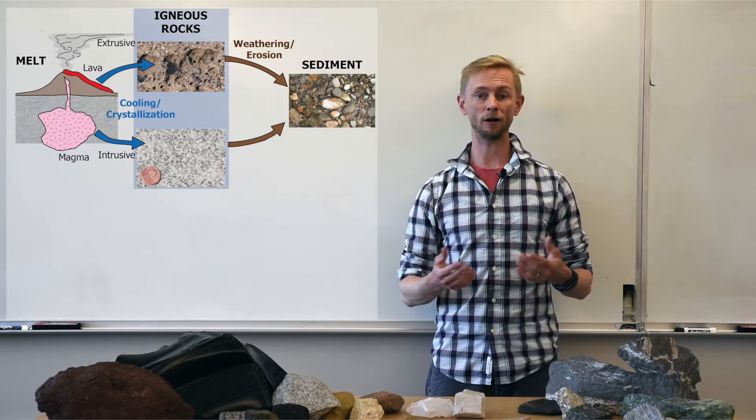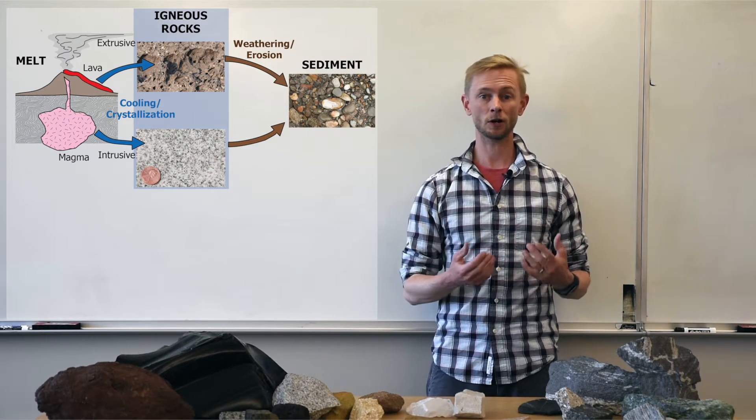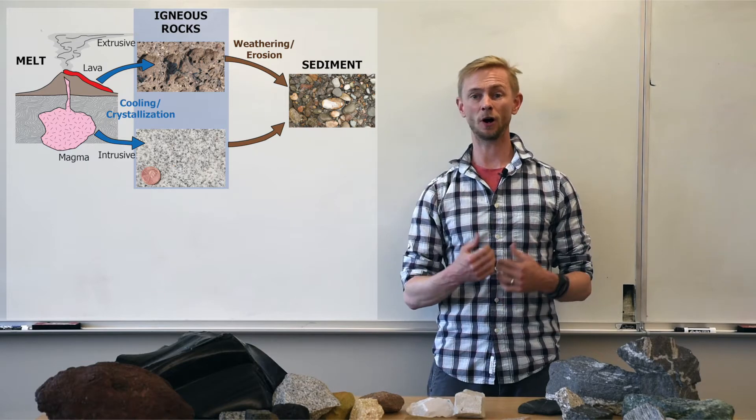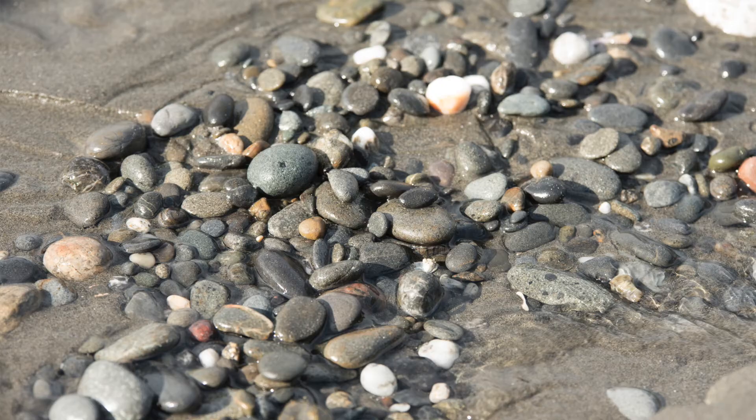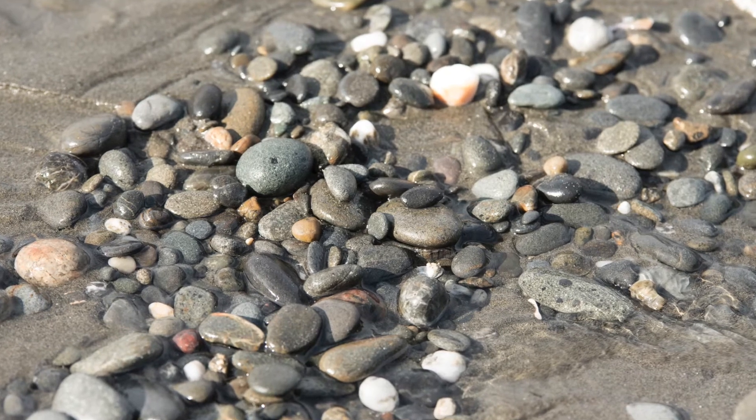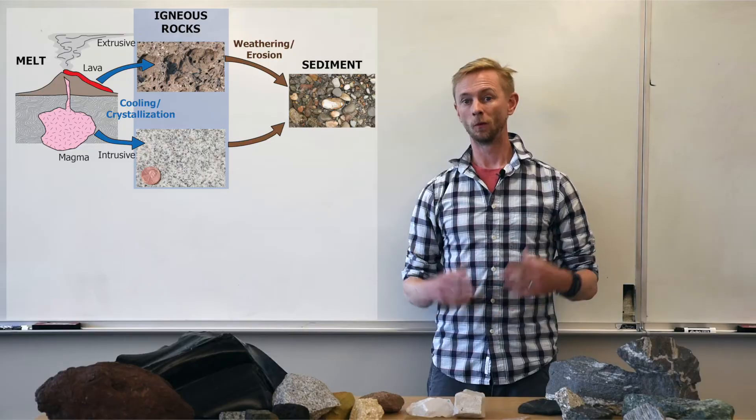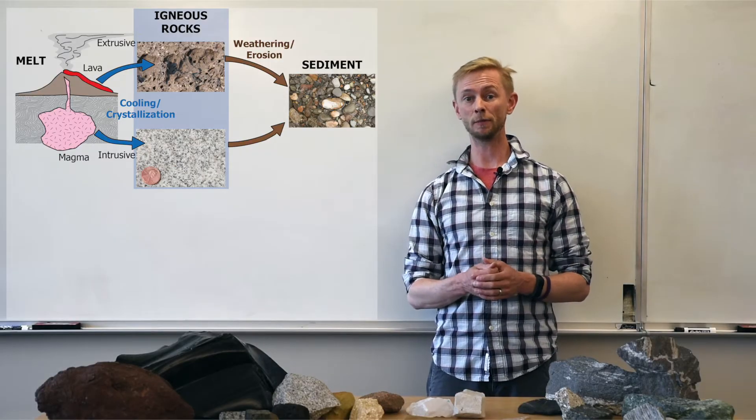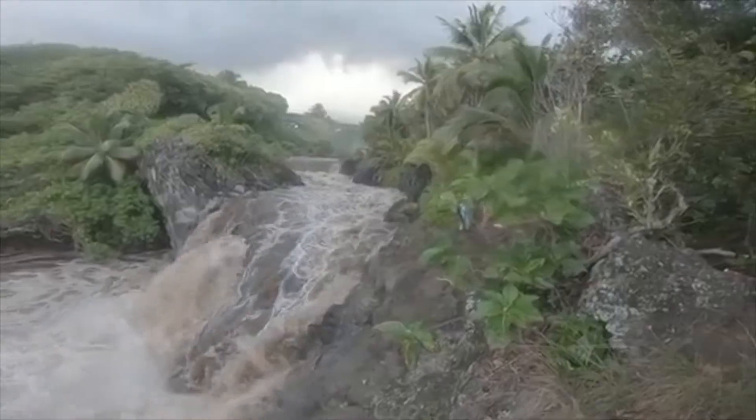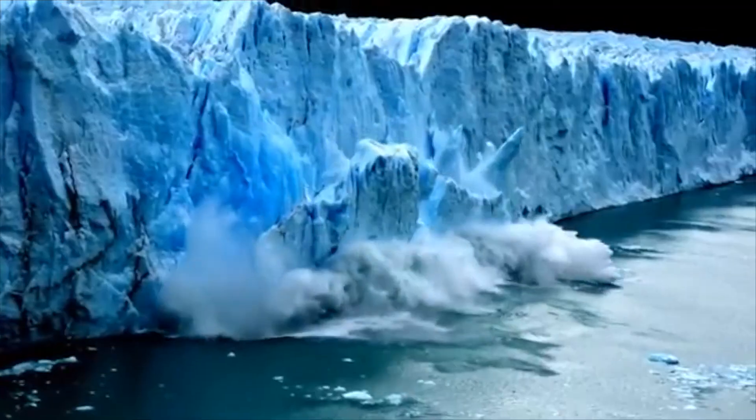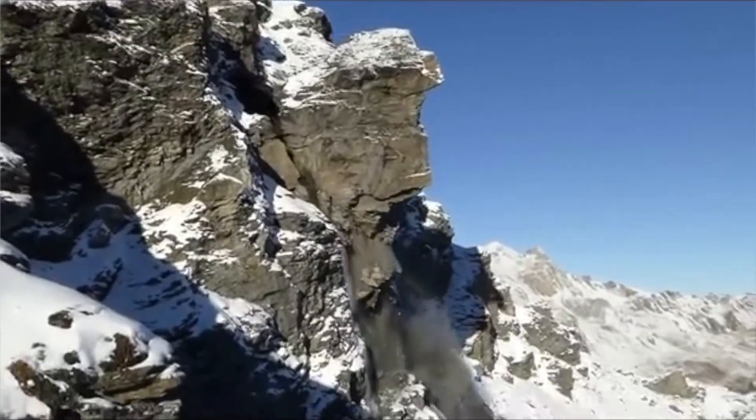Products of weathering processes, often loose, smaller rocks, are called sediment. Sediment comes in all shapes and sizes, from giant boulders all the way down to microscopic clay or dissolved bits of rock in an aqueous solution. One thing that all sediments have in common, though, they're all mobile, meaning that they can be transported by running water, wind, ice, or just plain old gravity.